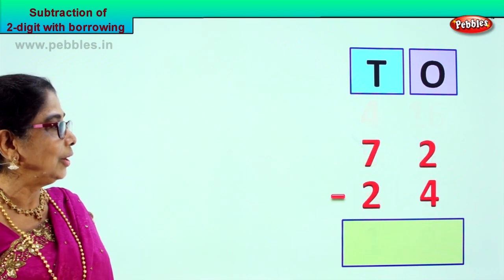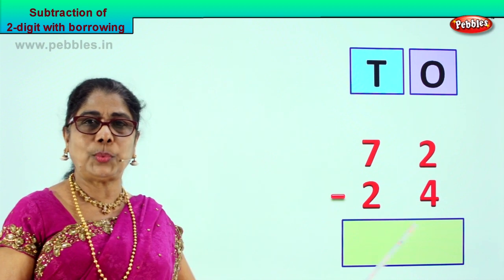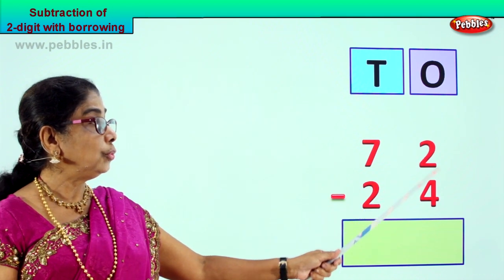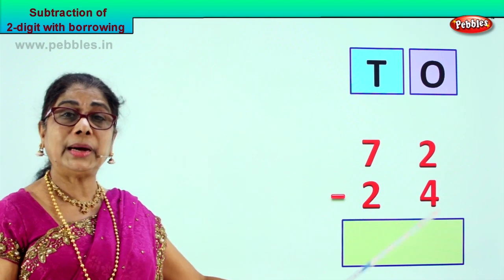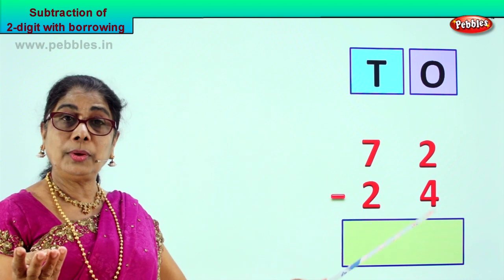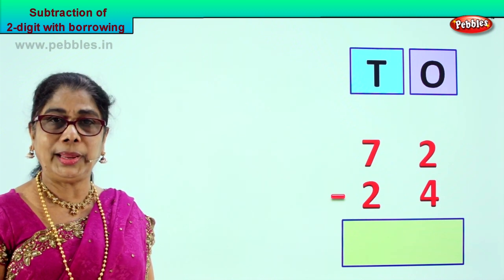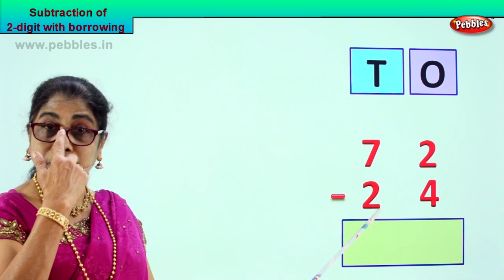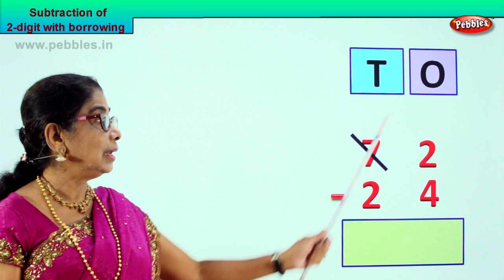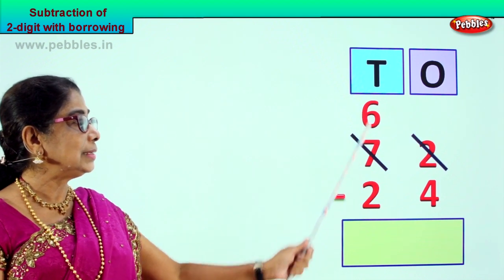Let us take a new sum. Look what you have here — we have 72 minus 24. 72 take away 24. When we minus, we begin with the 1's place first. Now here we have 2 minus 4. From a small number 2, you cannot minus a big number 4. 2 you cannot minus 4. Now here we are going to do borrowing. We go to the 10's place and we will borrow 1 from here.